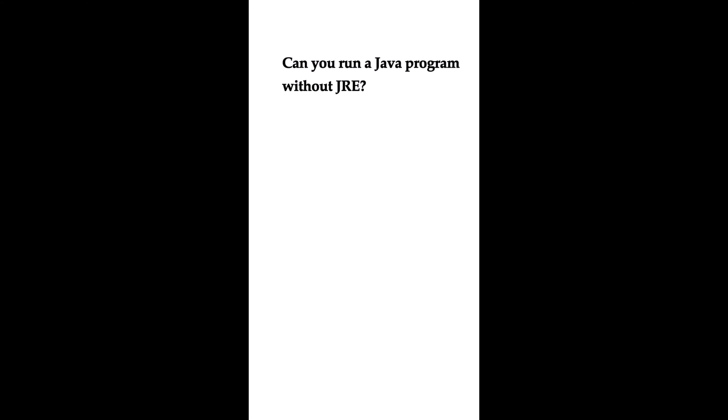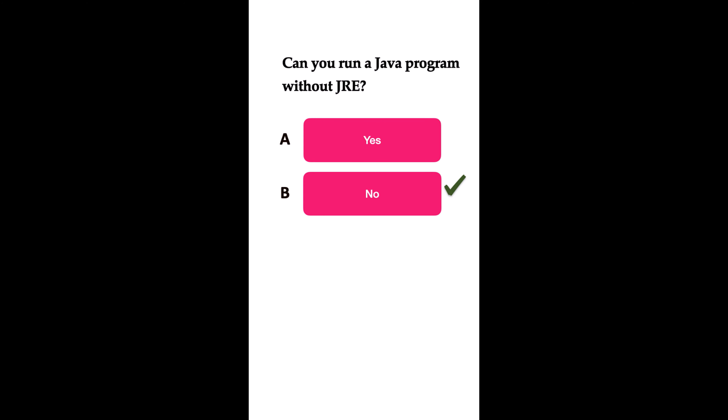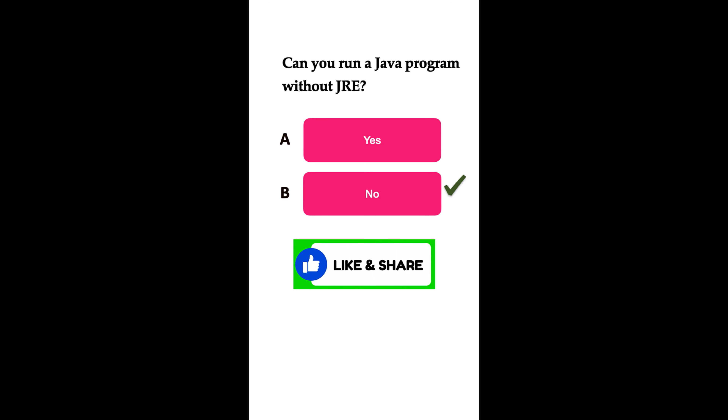Can you run a Java program without JRE? Option A: yes. Option B: no. The correct answer is no. You cannot run a Java program without JRE. JRE stands for Java Runtime Environment, and in order to run a Java program or application you must use JRE. JRE includes a JVM, core libraries, and other components necessary to run Java applications.